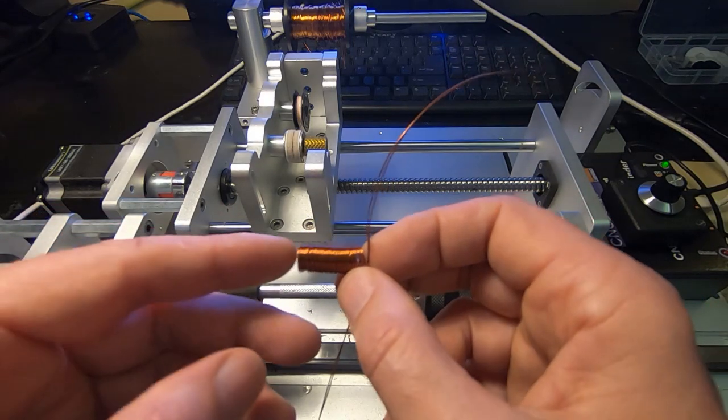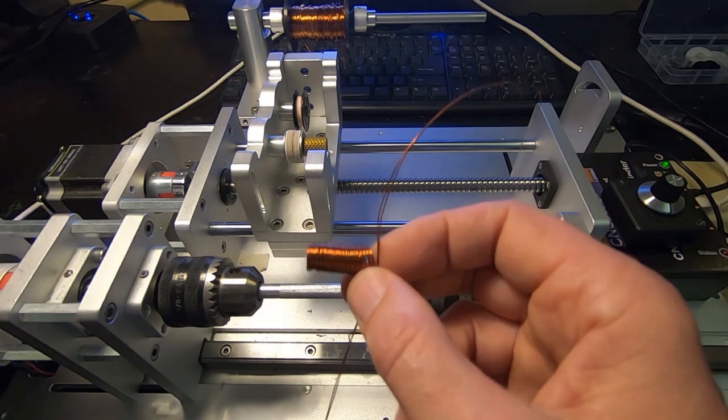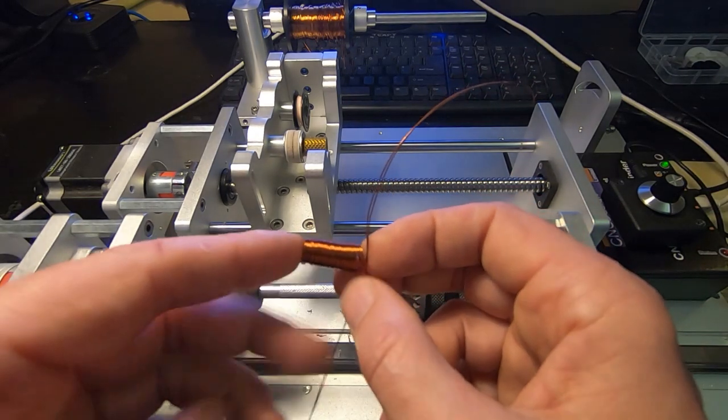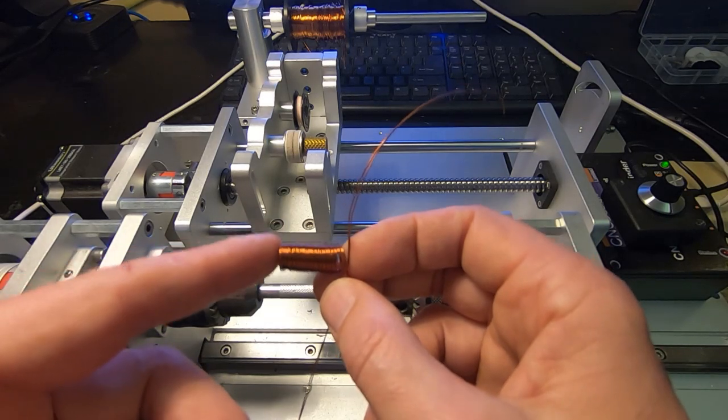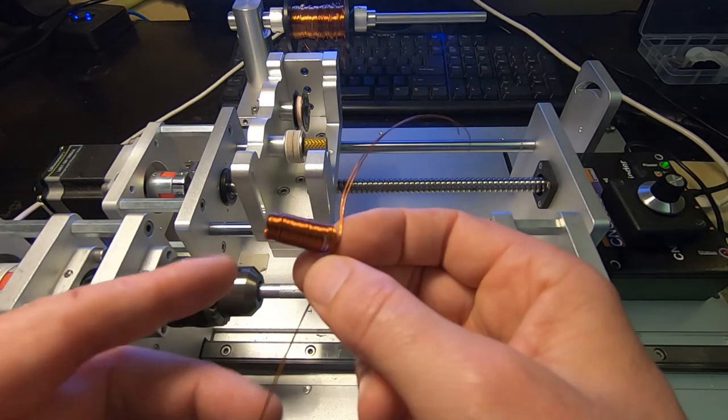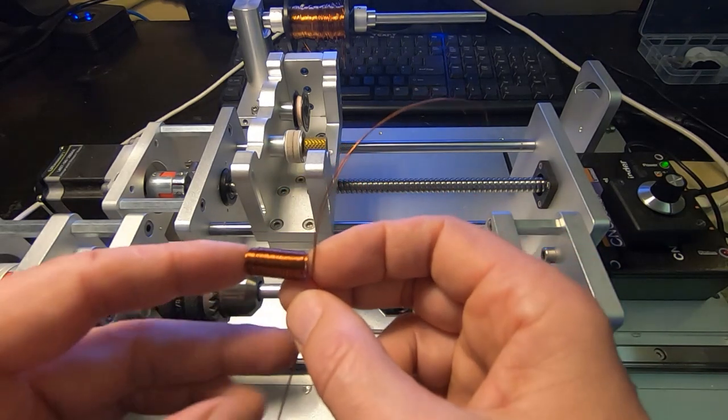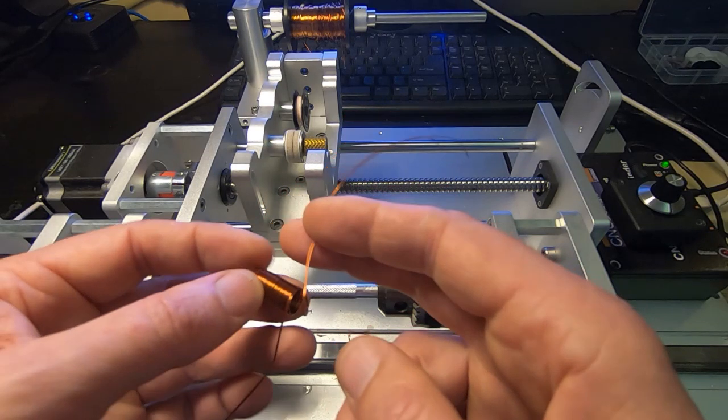There's many reasons why you might want to do it, but in this instance, the particular project I'm working on, I'm winding a transformer where one of the windings needs to have a higher current carrying capacity than a single wire will support. The natural question is, well why not just use a thicker wire?